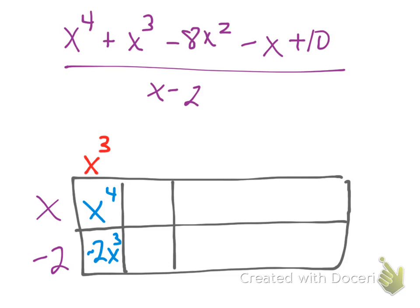As I continue by generic rectangle, I'm drawing in lines as I go. I know that I have like terms on these diagonals here. Well, those two need to add up to be my next term here of x to the 3rd. So since I have negative 2x cubed, and I want it to be 1x cubed, I need to make the top box 3x cubed. Now these two add to be 1x cubed.